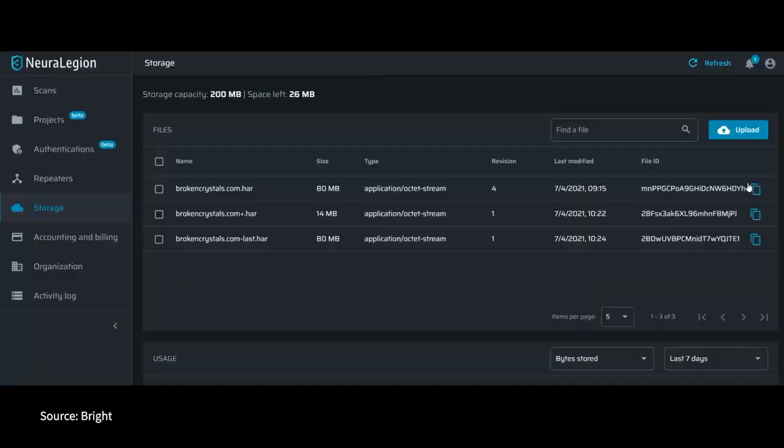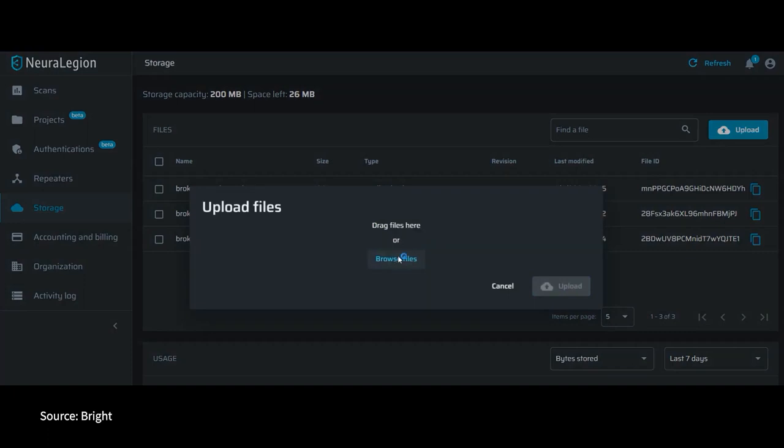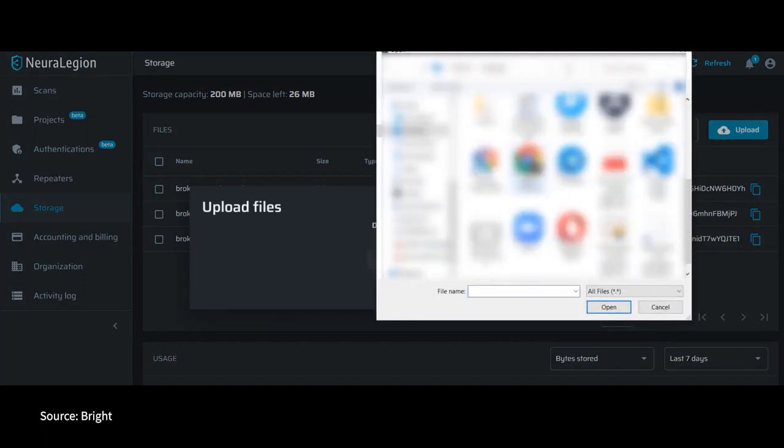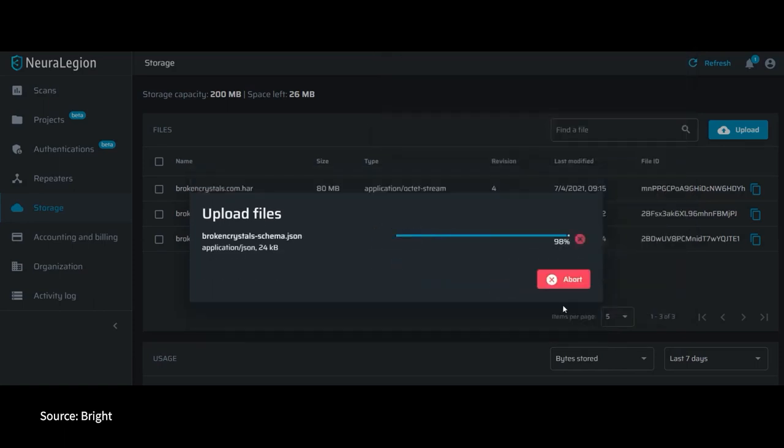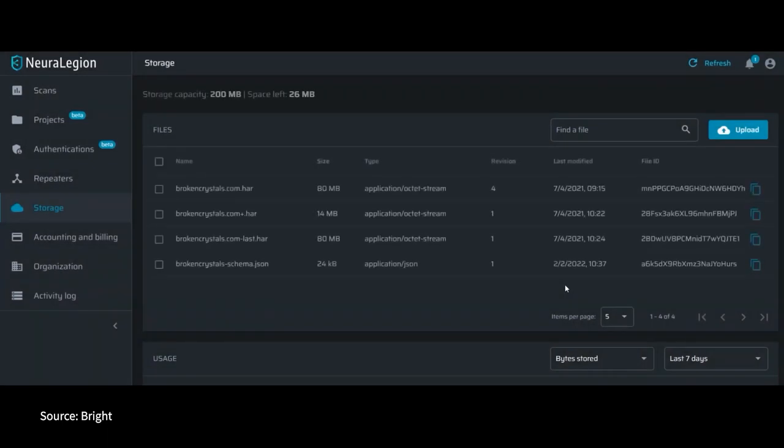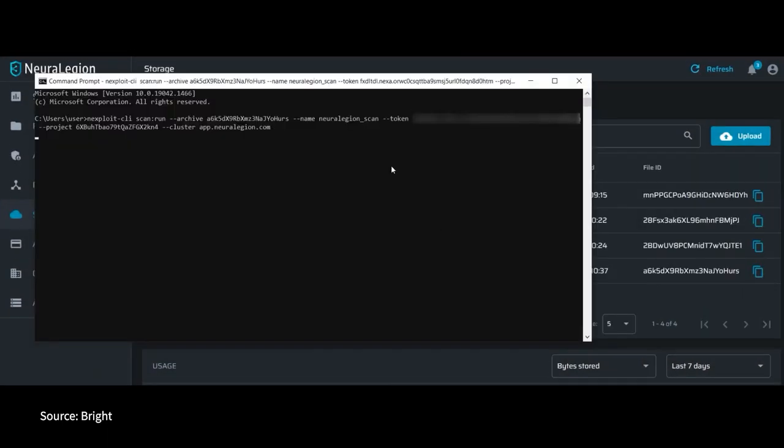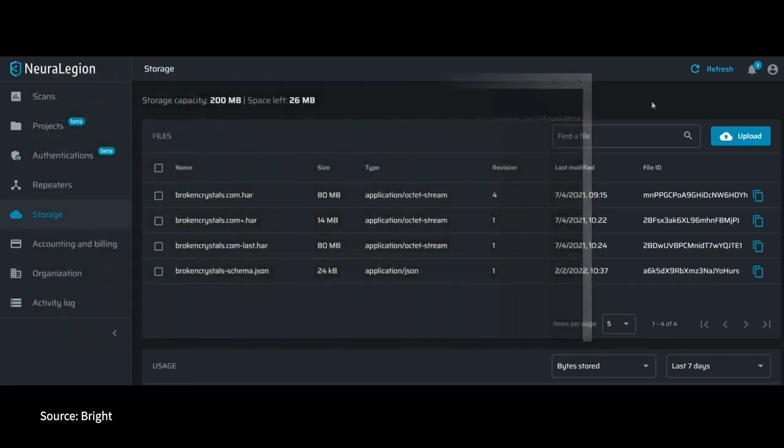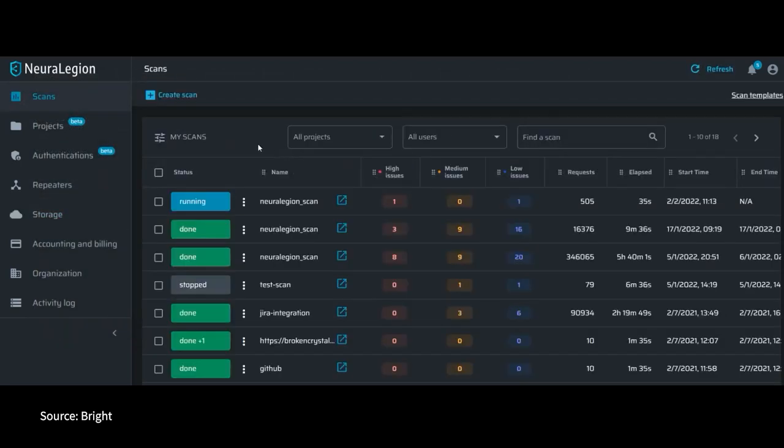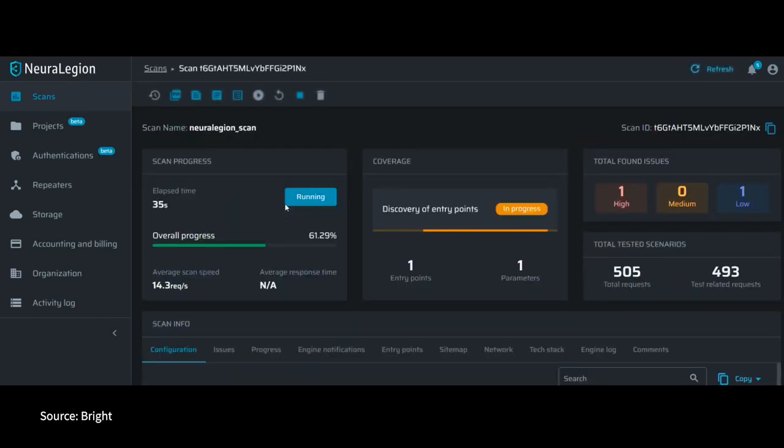The fourth one is Neural Legion. Neural Legion offers SaaS-based automated solutions and is one of the well-known application security testing tools used by pen testers and security teams for web applications, APIs, web sockets, microservices, etc. Immediate Neural Legion scan results can give you a prioritized list of API vulnerabilities with minimal false positives.